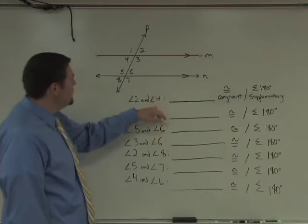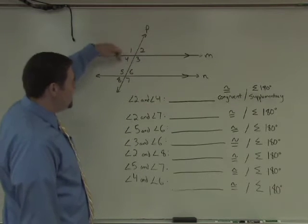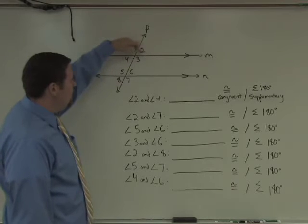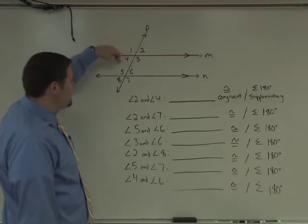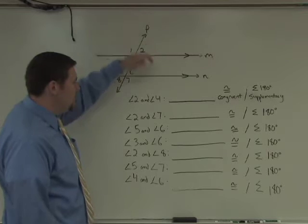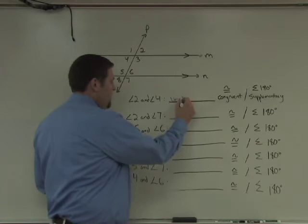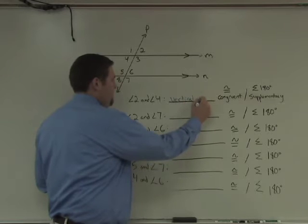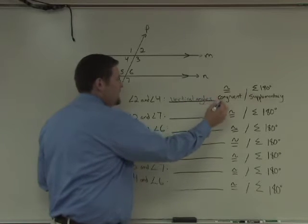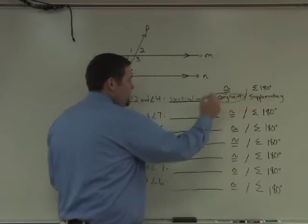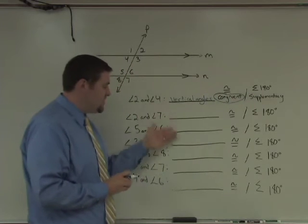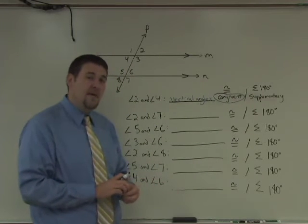2 and 4. 2 and 4 on the diagram right here are what we call vertical angles. Vertical angles are congruent. So to fill in the chart here, this will be vertical angles, and these are congruent. For the remainder of the sections here, you'll see the name pop up as I mention it.